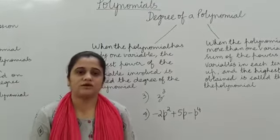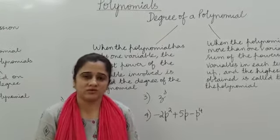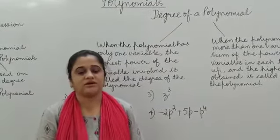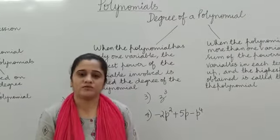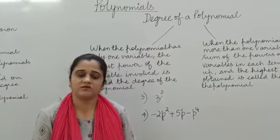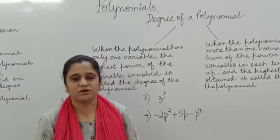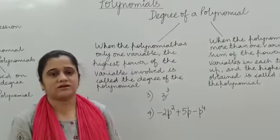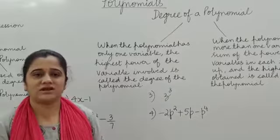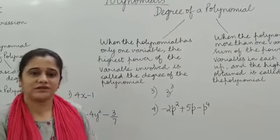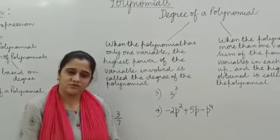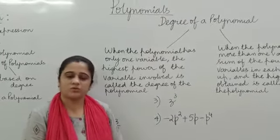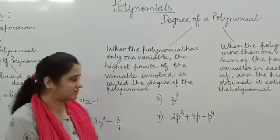The degree of a polynomial in one variable is the highest power of the variable in the polynomial. Let's understand how to find the degree of a polynomial in one variable with some examples.